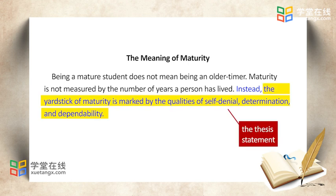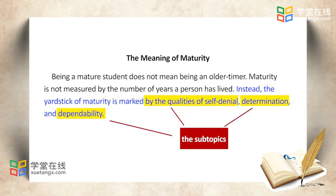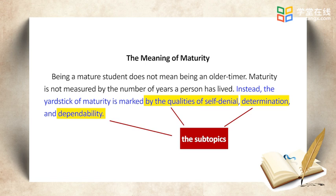It is not difficult for us to identify the thesis statement, which is: 'The yardstick of maturity is marked by the qualities of self-denial, determination, and dependability.' After identifying the thesis statement, let's make a further analysis to answer the questions given prior to our reading. First, the thesis statement is put at the end of the introduction paragraph. Second, the thesis statement is expressed in a complete sentence instead of questions or fragments. Third, there are subtopics listed in the thesis statement, which may be a very effective way to develop the main body of the essay.